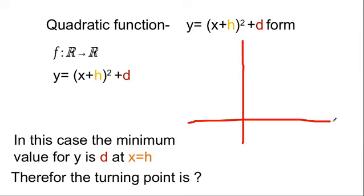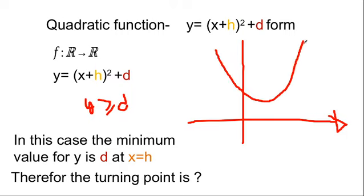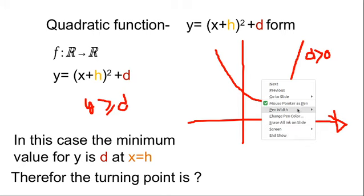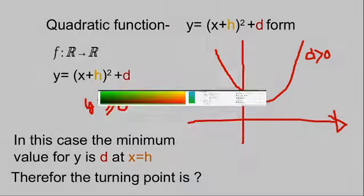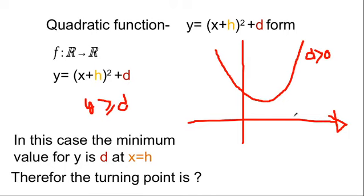If d is positive, the minimum value of y is positive, meaning every y value you obtain will be greater than zero. So the graph will not cut the x-axis — that means you will have no solution. When d equals zero, y minimum will be zero, so the graph just touches the x-axis — that gives one coincident root.